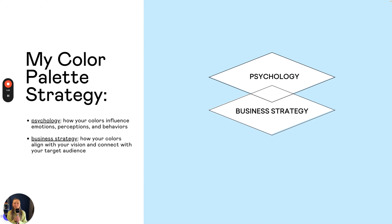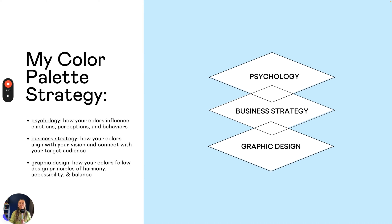The next component is business strategy — how your colors align with your business's vision and connect with your target audience. Is your brand trying to attract millennial parents or construction workers? It's really important to think about how your colors align with your target clients. And finally, graphic design — how your colors follow design principles of harmony, accessibility, and balance. This is where many people start, but it's just one of the three components.